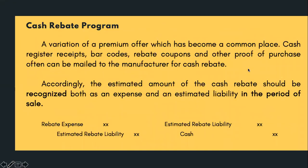Let's proceed with the cash rebate program. Cash rebate is a variation of a premium offer that has become commonplace. Cash register receipts, barcodes, rebate coupons, and other proofs of purchase can be mailed to the manufacturer for a cash rebate. The purpose is to promote or stimulate sales. The estimated amount of the cash rebate should be recognized both as expense and as estimated liability in the period of sale.